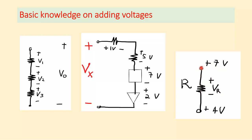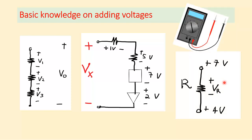Even though the voltage at one node is 7 volts with respect to ground and the other is 4 volts with respect to ground, VR — the voltage across the resistor — is 7 minus 4 equals 3 volts.